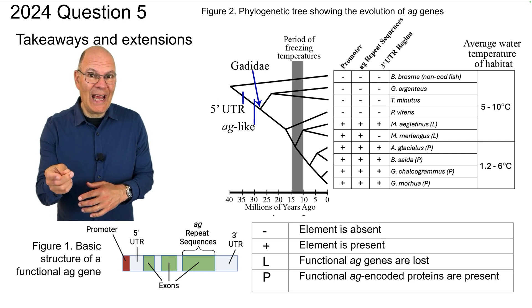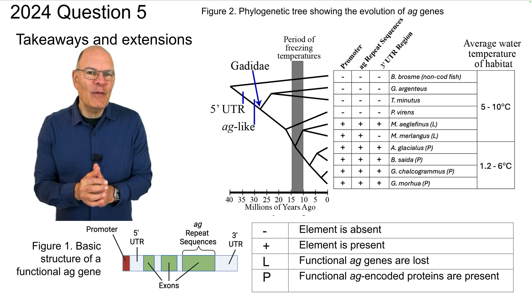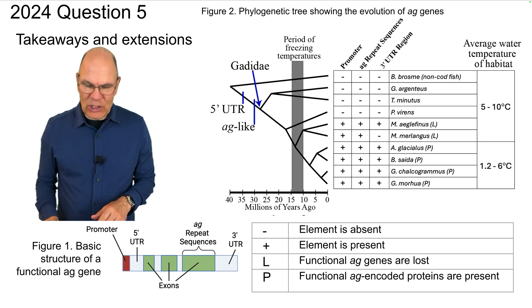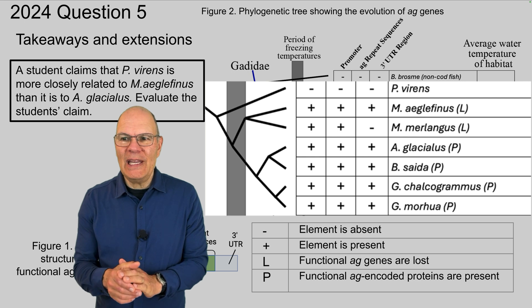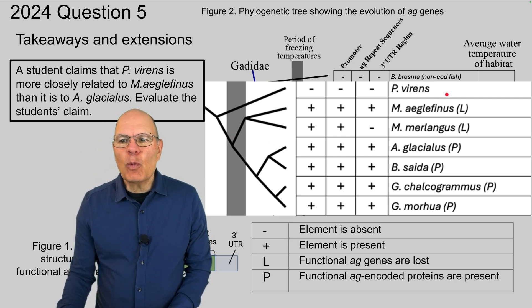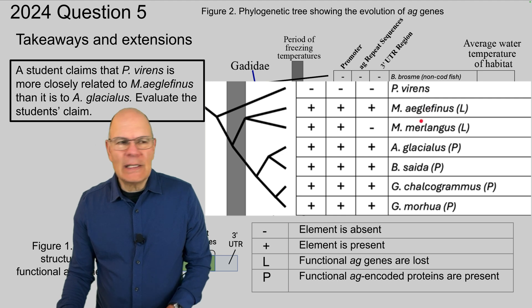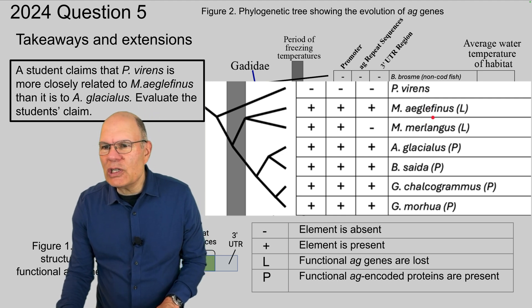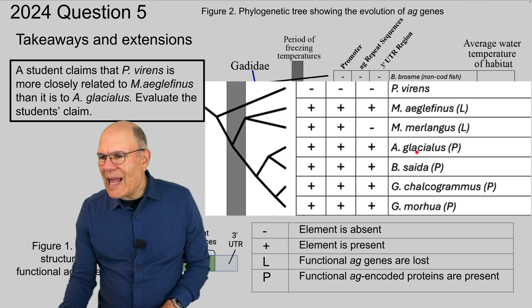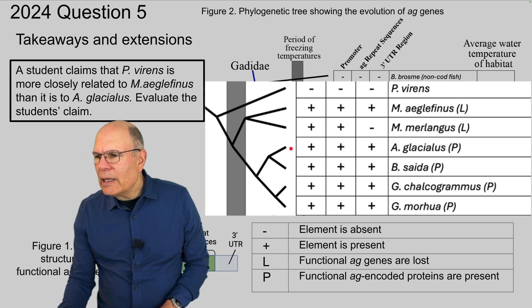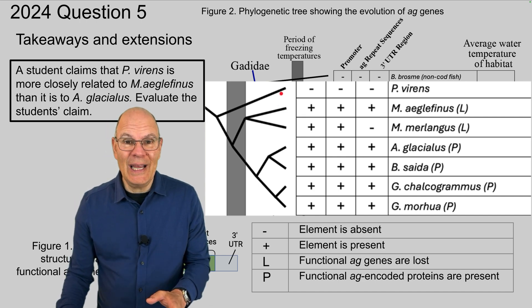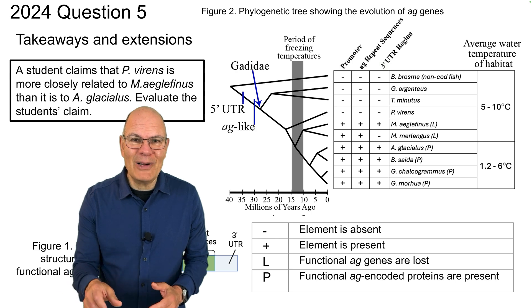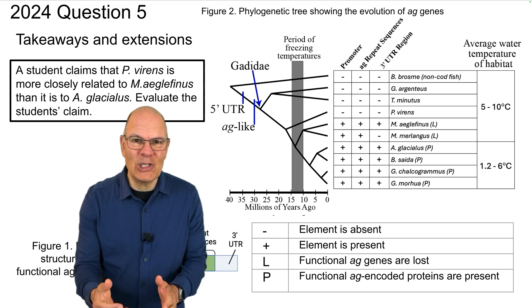To take this even further, what I want to do is throw a question at you that relates to a possible point of confusion that many students have in relationship to phylogenetic trees. Here's the question. A student claims that P. virans, P. virans is over here, is more closely related to M. aglefinis, I'm making up these pronunciations, than it is to A. glacialis over here. So here's A. glacialis, here's M. aglefinis, and here's P. virans. Evaluate the student's claim. Go ahead, give that a try, hit pause, write out an answer, and then I'll discuss what my answer is.